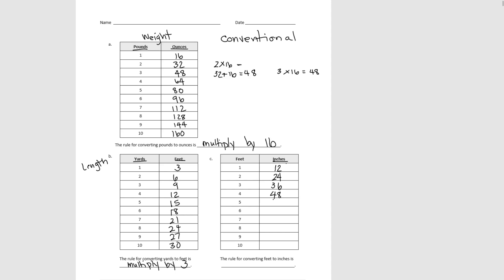For 5 feet, that would be 60 inches. Then 72, then 84, then 96, then 108, and 120 inches. So the rule for converting feet to inches is to multiply by 12.